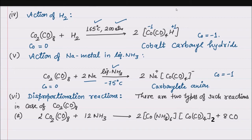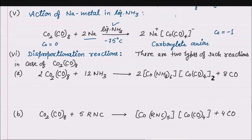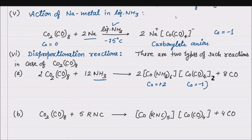Now the disproportionation reactions — there are two types. First, strong bases having nitrogen or oxygen donor atoms cause disproportionation to give cobalt in +2 and -1 oxidation states.